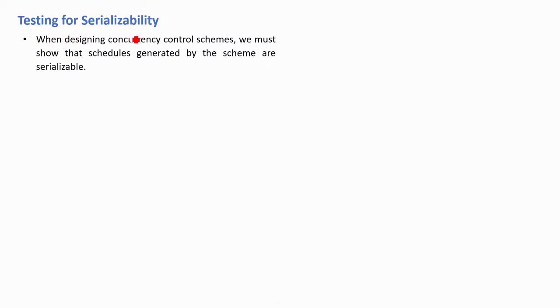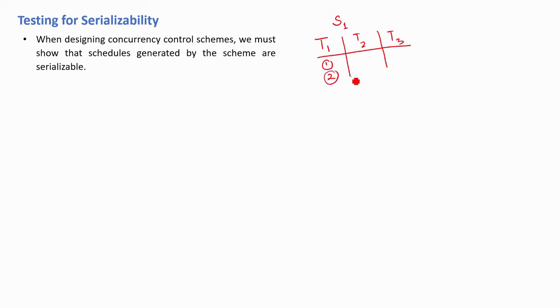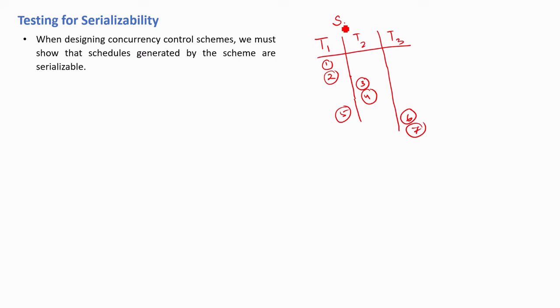In this lecture we'll study the testing for serializability. When designing concurrency control schemes, we must show that schedules generated by the scheme are serializable. Let's suppose we have a schedule s1 and a set of transactions t1, t2, t3 with some instructions numbered one through seven. When more than one transaction executes concurrently, we have to show whether this schedule is serializable or not. Schedule s1 is said to be serializable if it is conflict equivalent to a serial schedule.